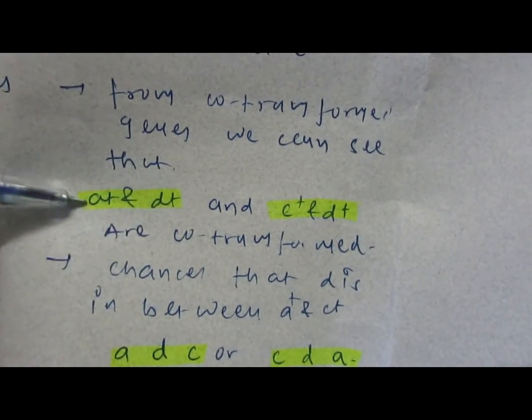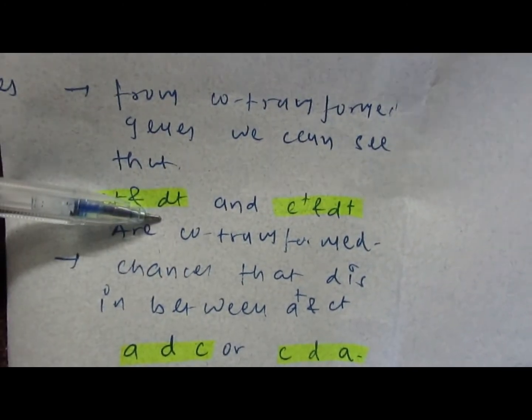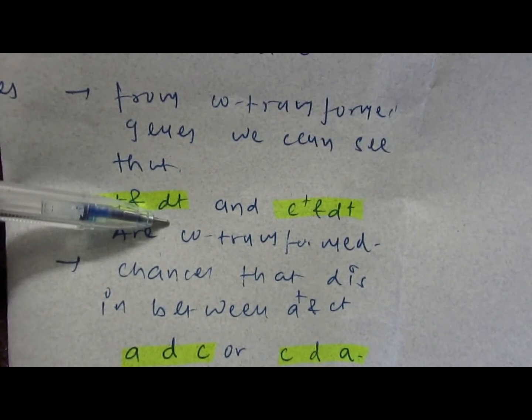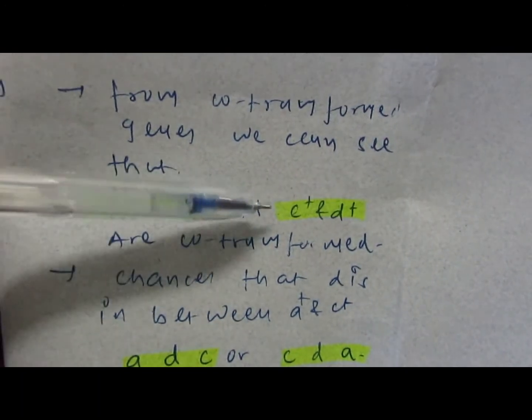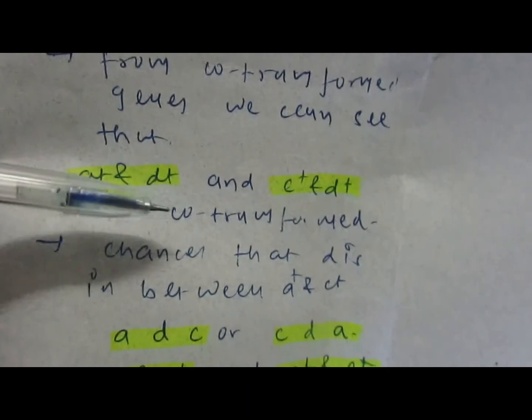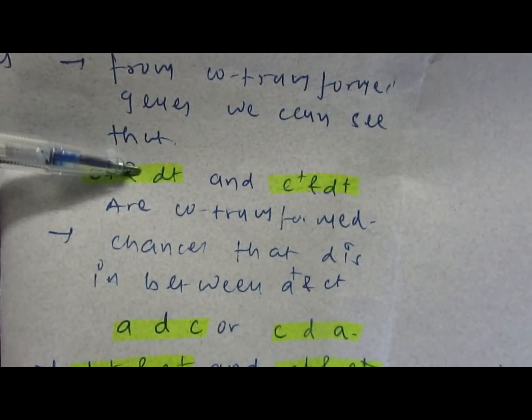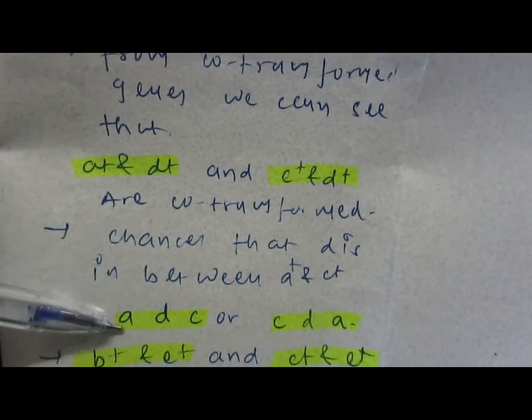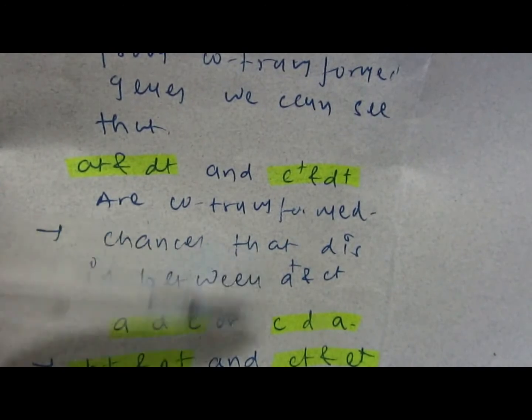It clearly suggests that there are chances that d can be situated in between a and c. So if we write the order that means a-d-c, or else the possibility can be c-d-a.